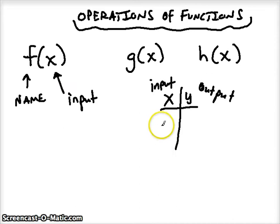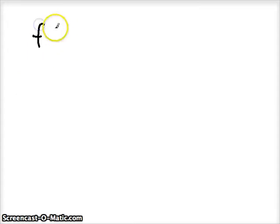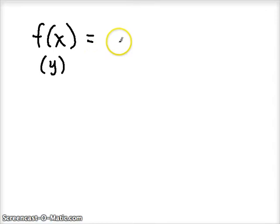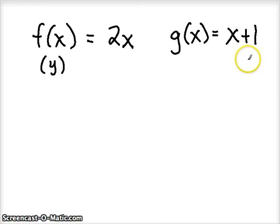We'll be adding, subtracting, multiplying, and dividing using our basic operations of math with entire functions. Let's define a function: f(x) equals two times our input, or 2x. We'll define a different function and call it g, defined as adding one to an input, so g(x) equals x plus one.